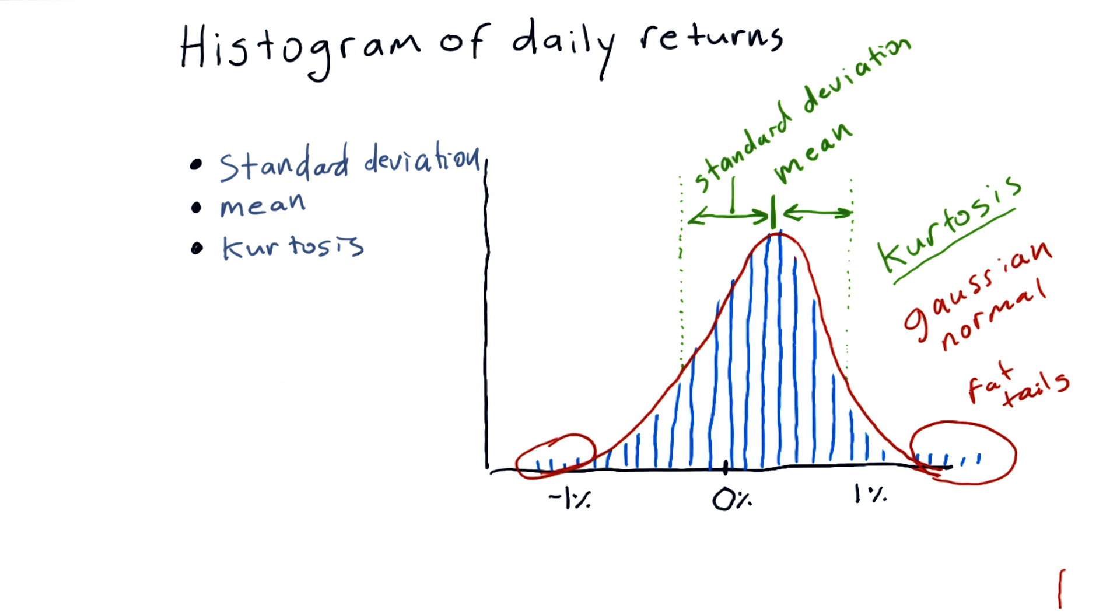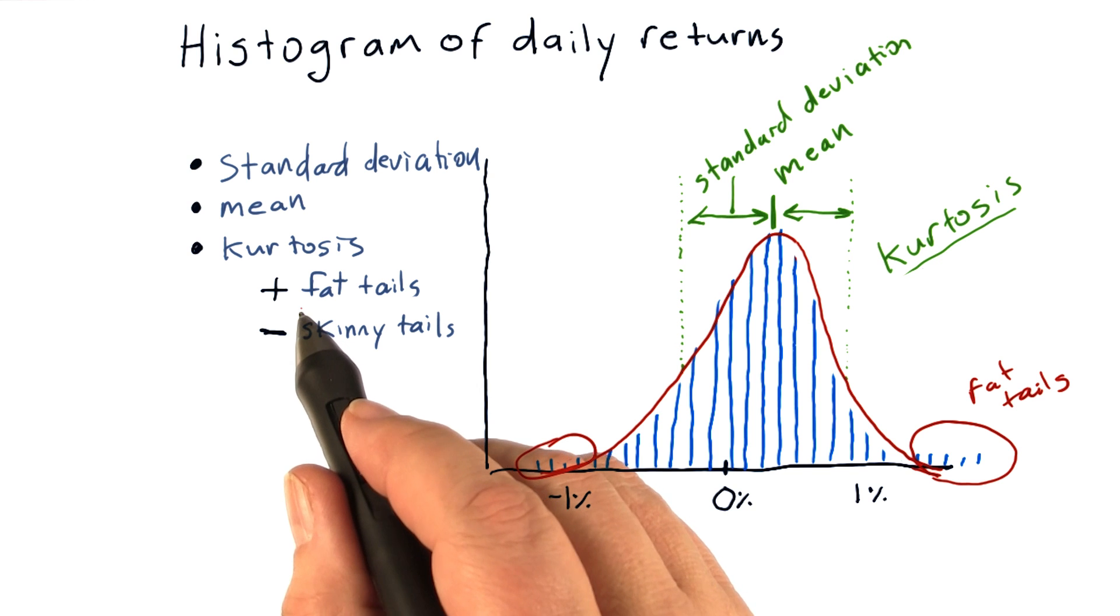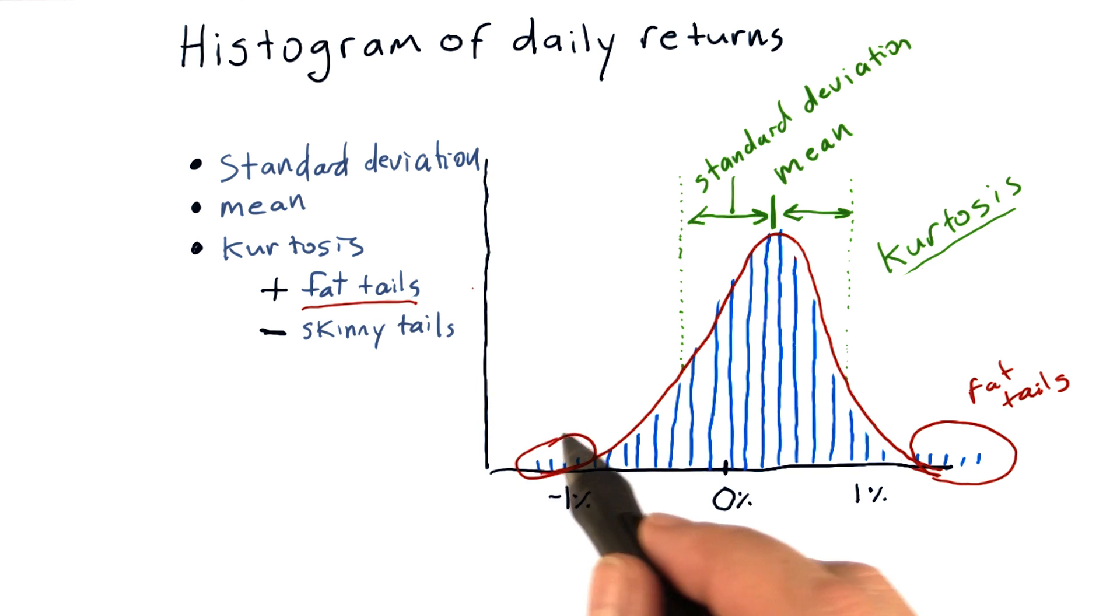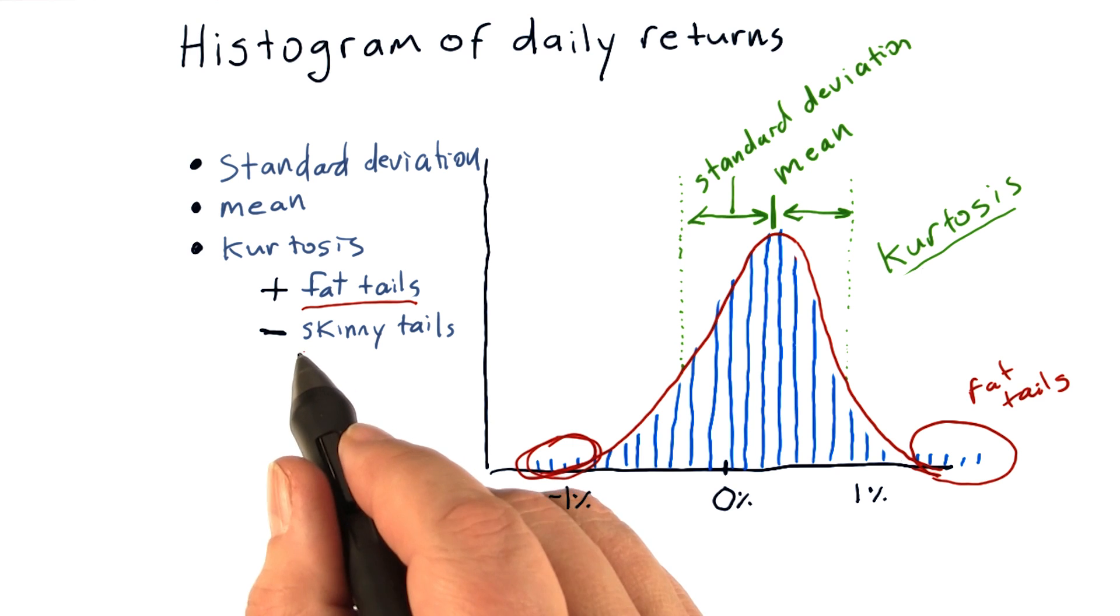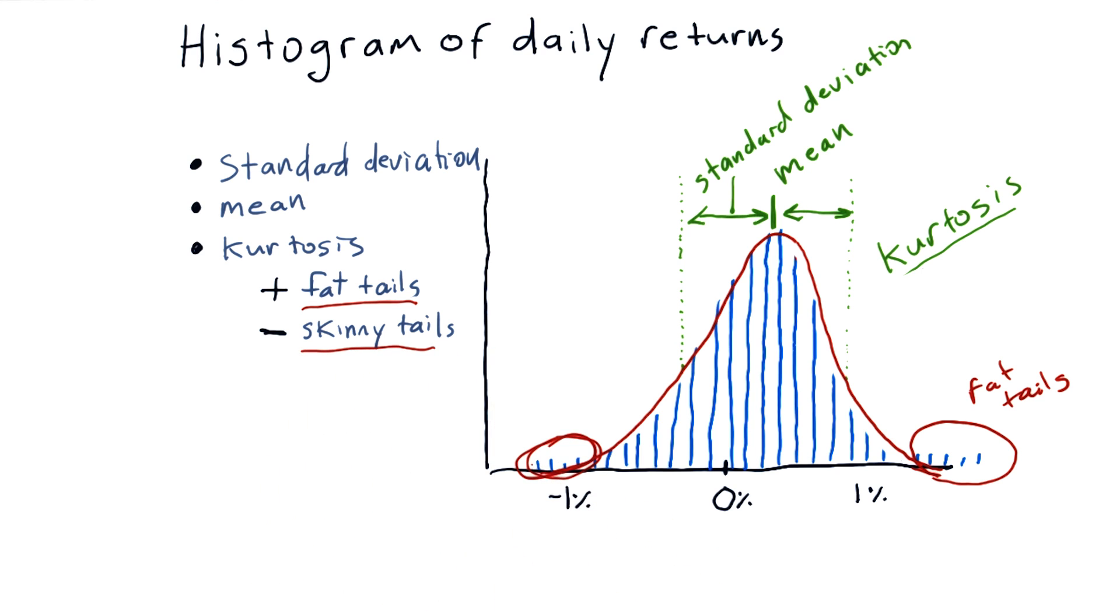And remember the following about kurtosis. If we've got a positive kurtosis, that means we've got fat tails, like in this example. There's more occurrences outside in the tails than would normally happen with a Gaussian distribution. And if we've got a negative kurtosis, we've got skinny tails, meaning there's less out there.